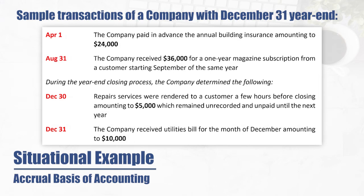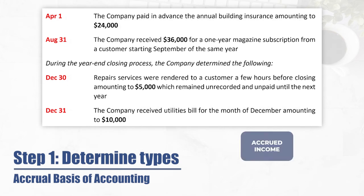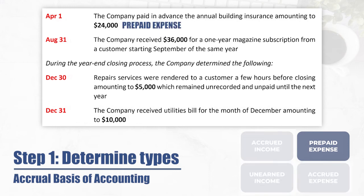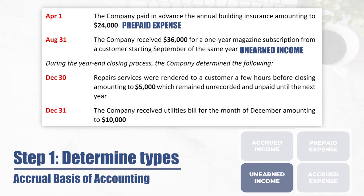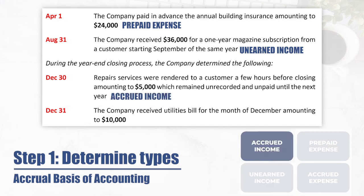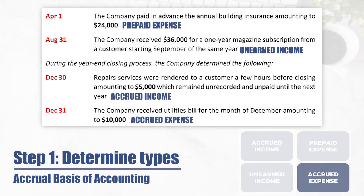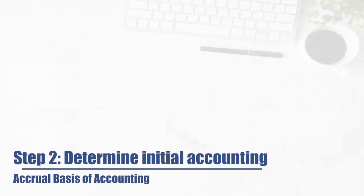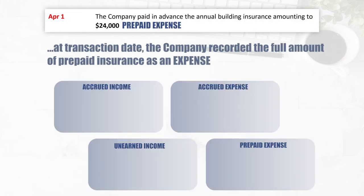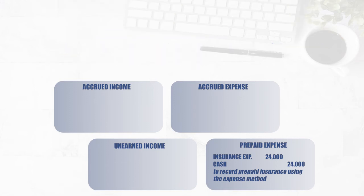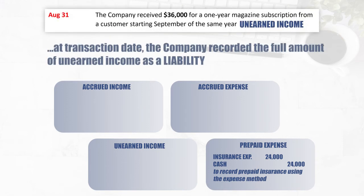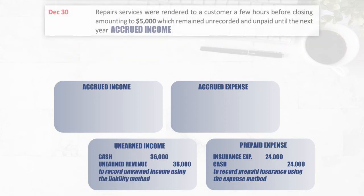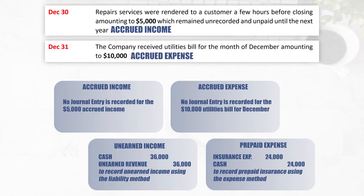To analyze these transactions, the first step is to determine the nature of each transaction. The building insurance is a prepaid expense. The magazine subscription is unearned income. The repair services is accrued income. The utilities bill is an accrued expense. The next step is to determine how they were initially accounted for. For building insurance, the company debited insurance expense and credited cash. For magazine subscriptions, the company debited cash and credited unearned revenue. For both the repair services and utilities bill, there is no entry as of December 31.